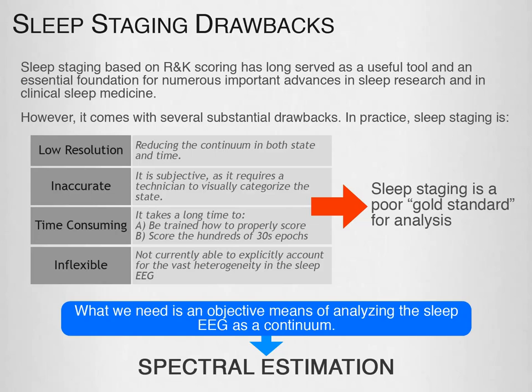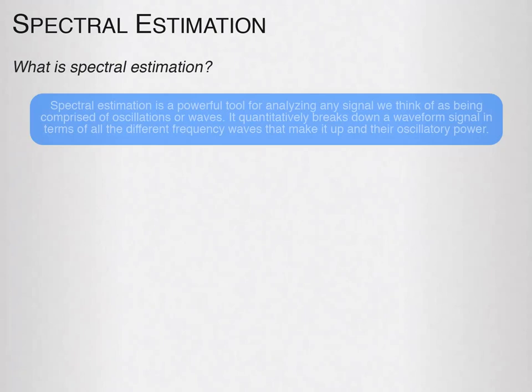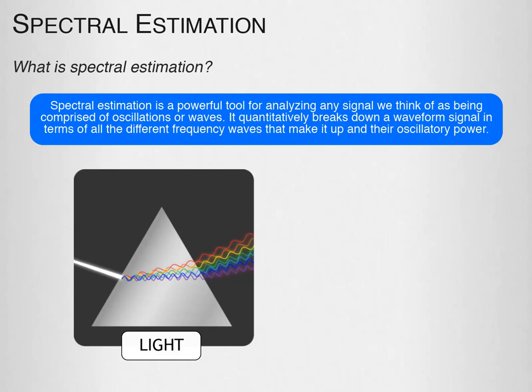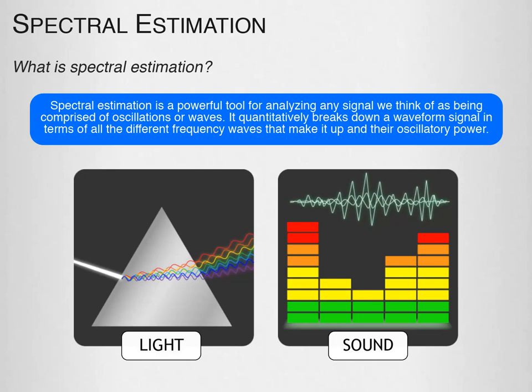What is spectral estimation? Spectral estimation is a powerful tool for analyzing any signal composed of oscillations or waves. It quantitatively breaks down a waveform signal in terms of all the different frequency waves that make it up and their oscillatory power. For example, white light is a waveform composed of colors of different wavelengths — when we use a prism, it breaks the waveform down so we can observe the individual color wavelengths. Similarly, a graphic equalizer breaks sound down into low, medium, and high frequency waves. Both can be considered forms of spectral estimation.